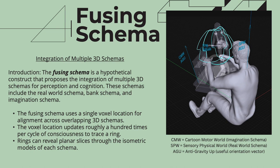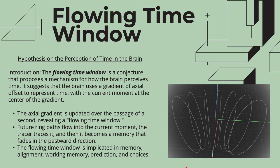In the diagram, CMW stands for cartoon motor world, which was a term I used for the imagination schema, and SPW stands for sensory physical world, the term for the real-world schema. AGU is anti-gravity up — a useful orientation vector denoting which way is up in any given schema. The imagination schema can rotate around relative to the real-world schema, and alignment rings taken from the bank are overlaid together within a fusing schema.